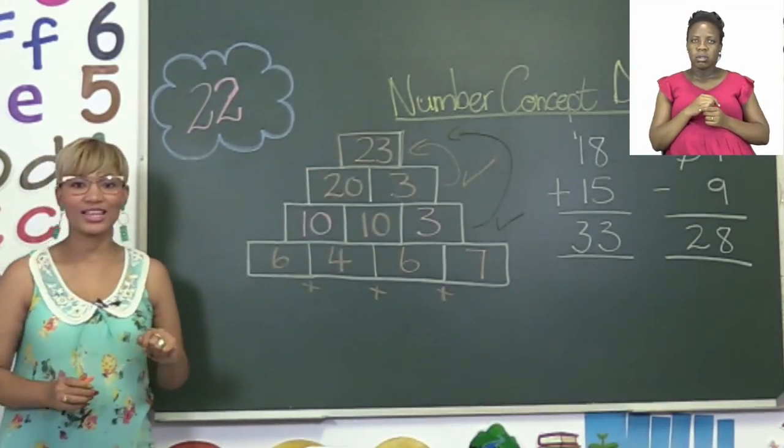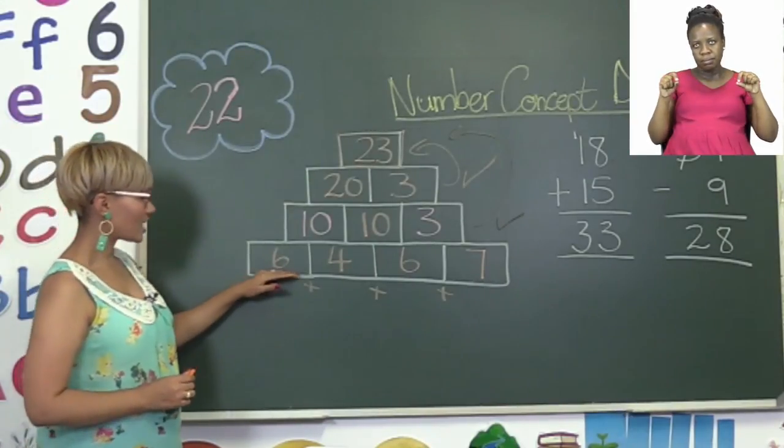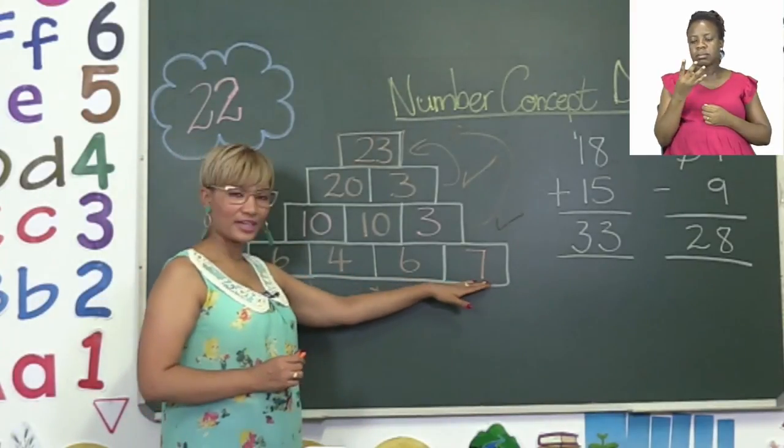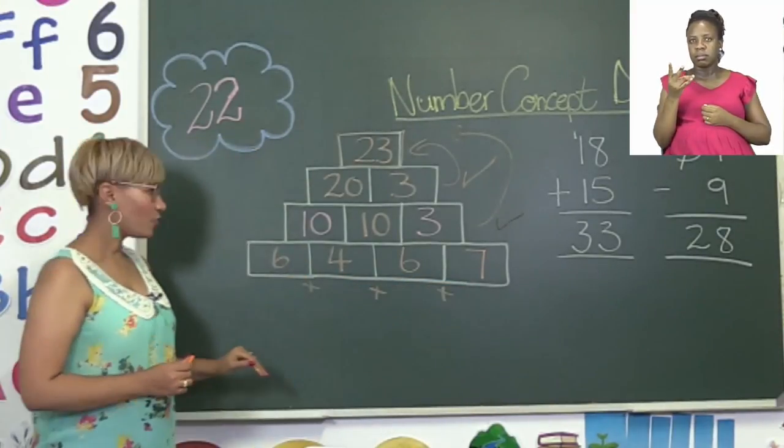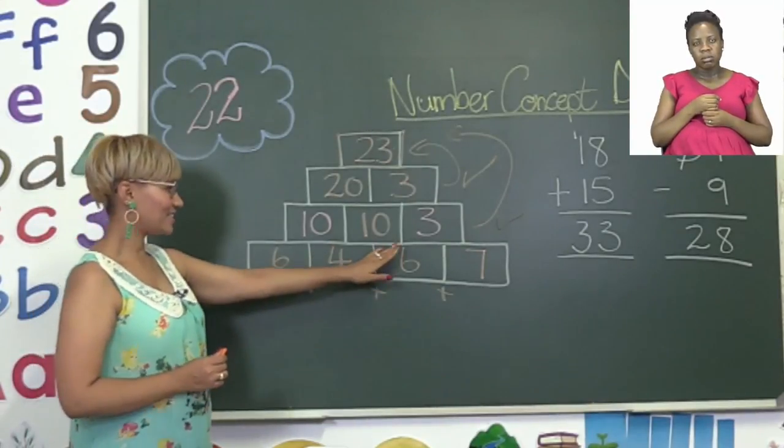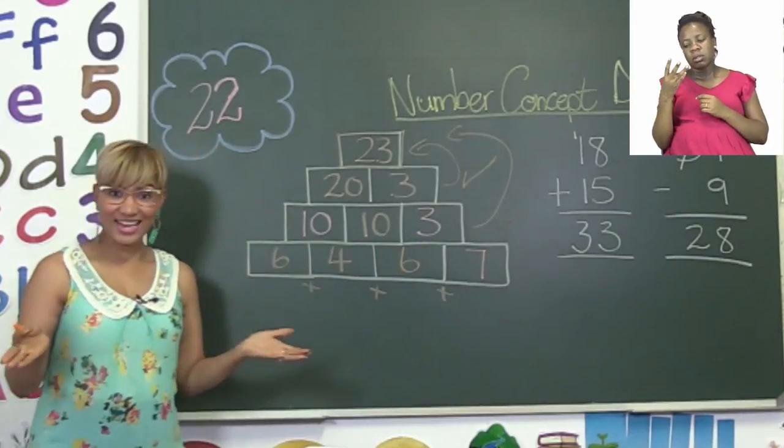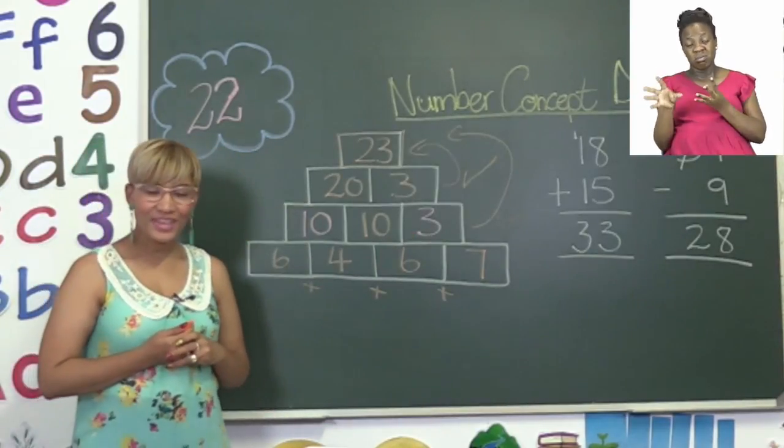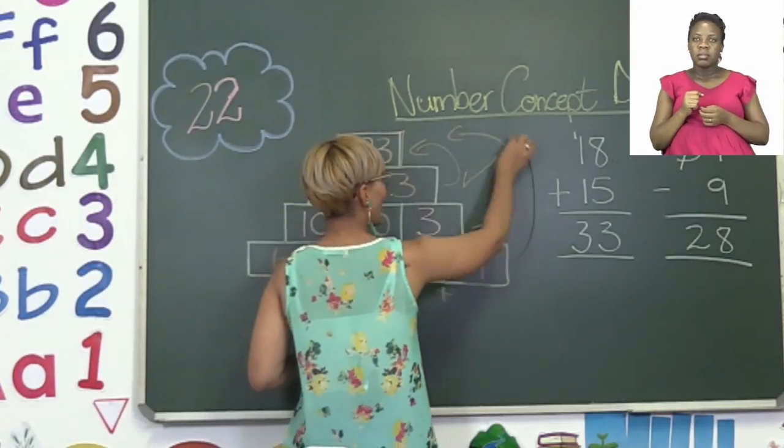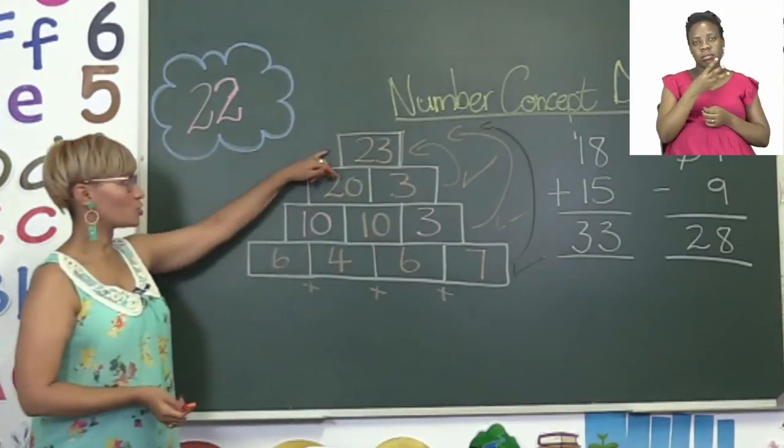Now let's try the last part. Here we have 6, 4, 6, 7. Now if we take 6 plus 4 plus 6 plus 7, will that add up to 23? Yes it does boys and girls. So this row is also equal to 23.